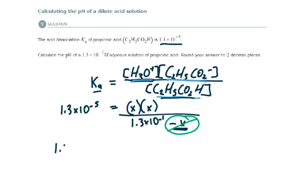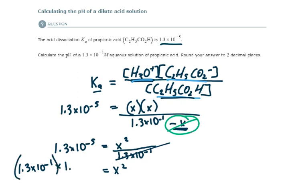So 1.3 times 10 to the minus 5 is equal to X squared over 1.3 times 10 to the minus 1. I bring 1.3 times 10 to the minus 1 up. It cancels over here. 1.3 times 10 to the minus 1 times 1.3 times 10 to the minus 5.